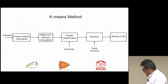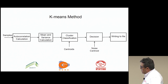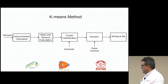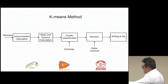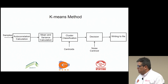This is the block diagram for this method. We take the samples and calculate the autocorrelation, then the mean and the variance, and we do the cluster classification. We have to enter the centroids, which must be obtained through experimentation beforehand. Then we tell the block which centroid corresponds to noise so it can make a decision, and it writes the result to a file along with other data such as coordinates, location, time and date.